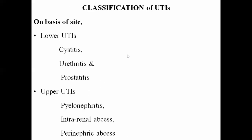Classification of UTI on the basis of site: lower UTI includes urethritis, prostatitis, and cystitis; upper UTI includes pyelonephritis, intrarenal abscess, and perinephric abscess — these are more complicated. On the basis of severity: uncomplicated UTI means the urinary tract is structurally and functionally normal with only bacterial infection present, such as short-duration cystitis (1–5 days). Complicated UTI means the urinary tract is structurally or functionally abnormal — for example, due to renal stone or BPH — leading to infection, or cystitis of prolonged duration.